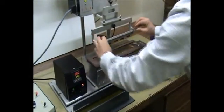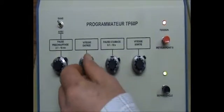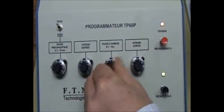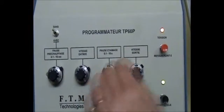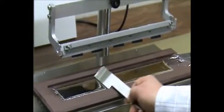The settings of the TP60P allow to monitor precisely four parameters: the preheating time, the entrance speed in the bath, the immersion time, and the exit speed.